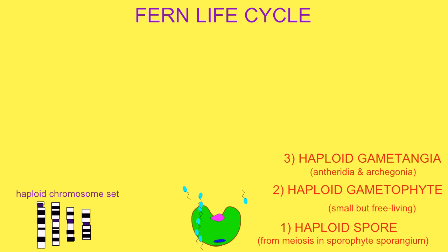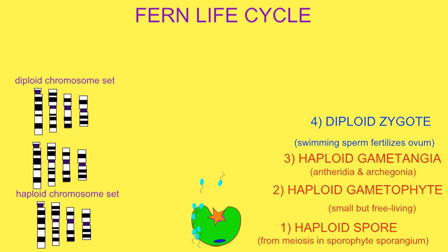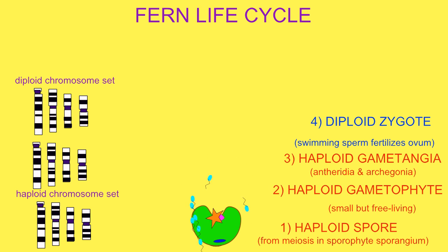However, if the gametophyte is self-sterile or if it produces archegonia and antheridia at different times, this would ensure outcrossing. The sperm from the antheridia are flagellated and therefore must be in the presence of water in order for them to swim to fertilize the ovum in the archegonium.